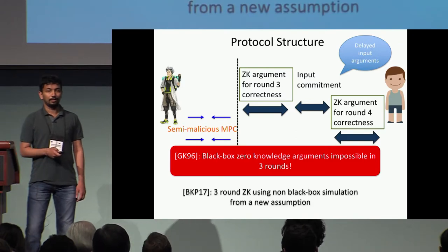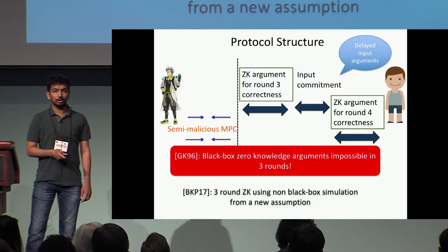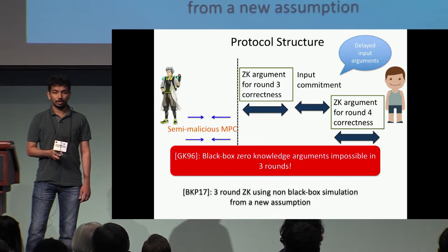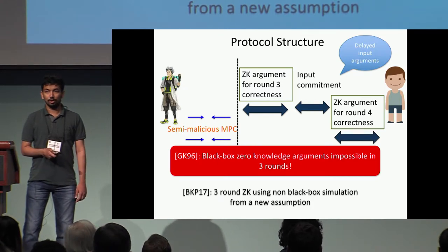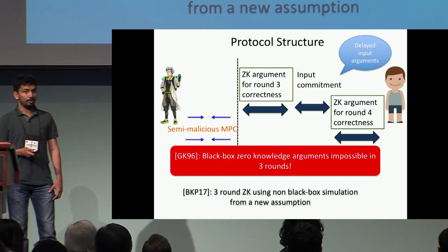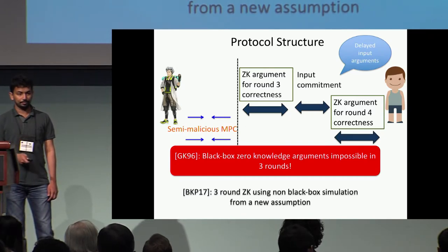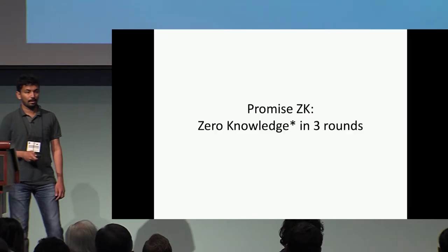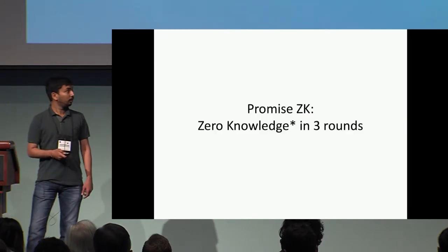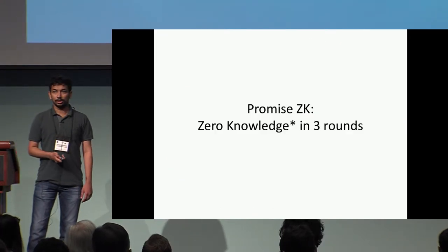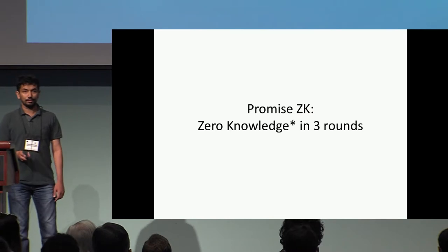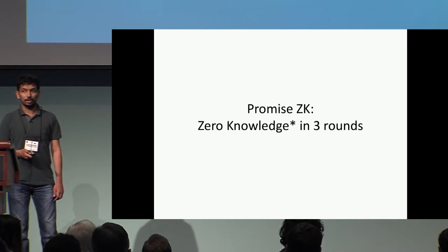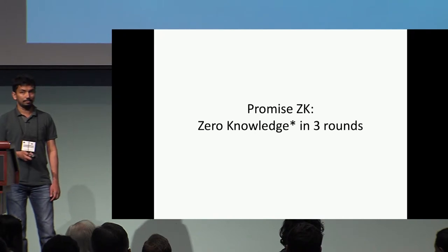A recent work by Bidansky et al. showed how to construct three-round zero knowledge using non-black-box simulation from a new assumption. However, our focus is to build round-optimal MPC from well-studied polynomial-time assumptions. So we introduce a new version of zero knowledge called Promise ZK, and show how to build it in three rounds and how it's sufficient to build round-optimal MPC.